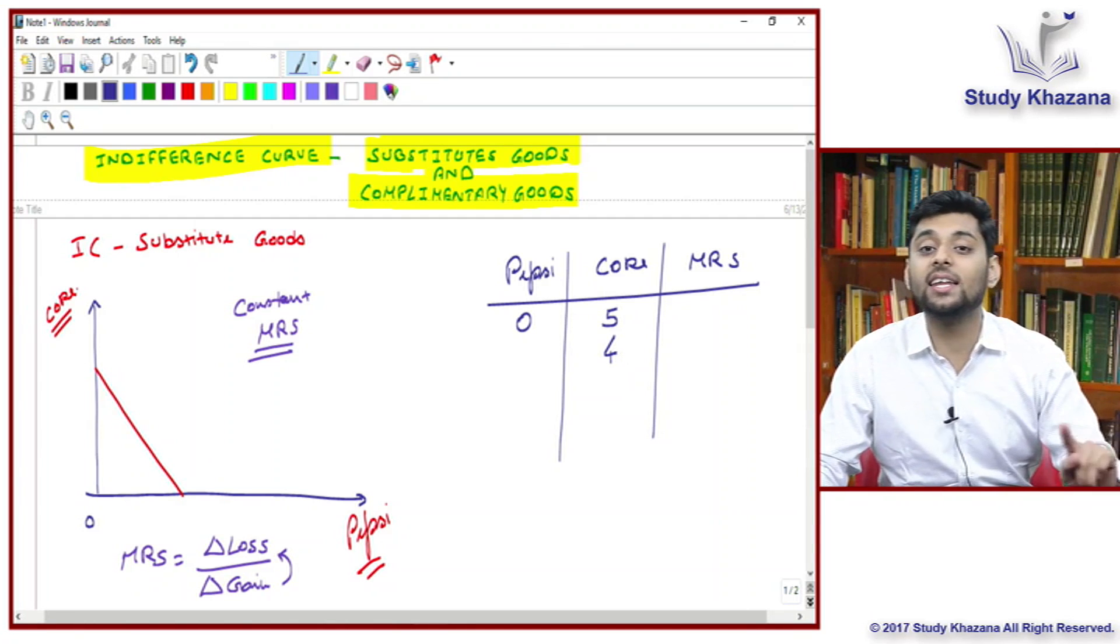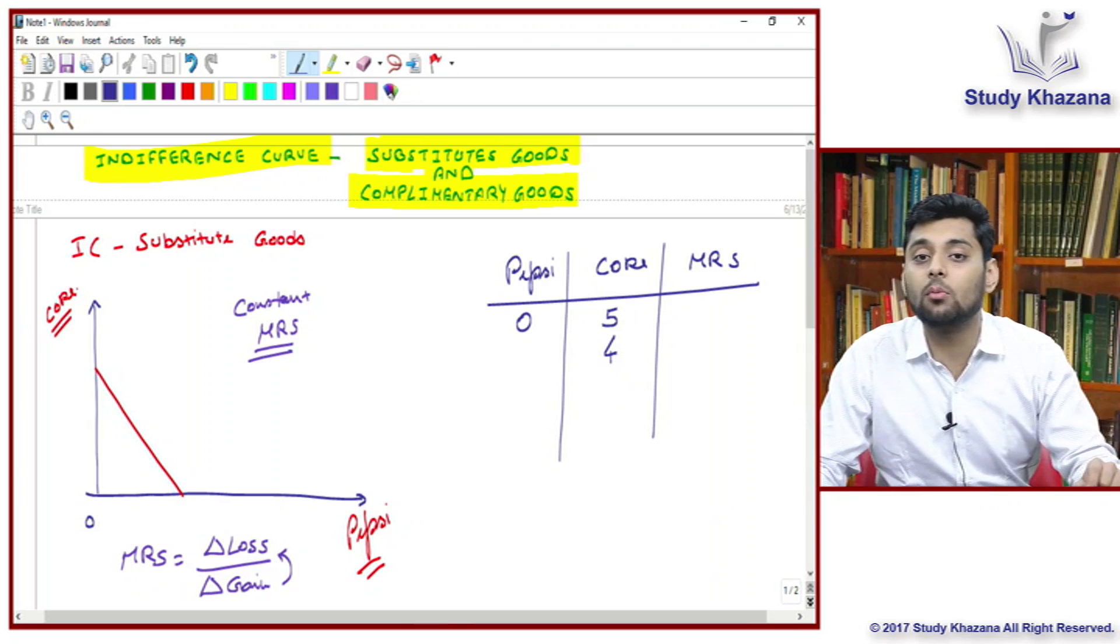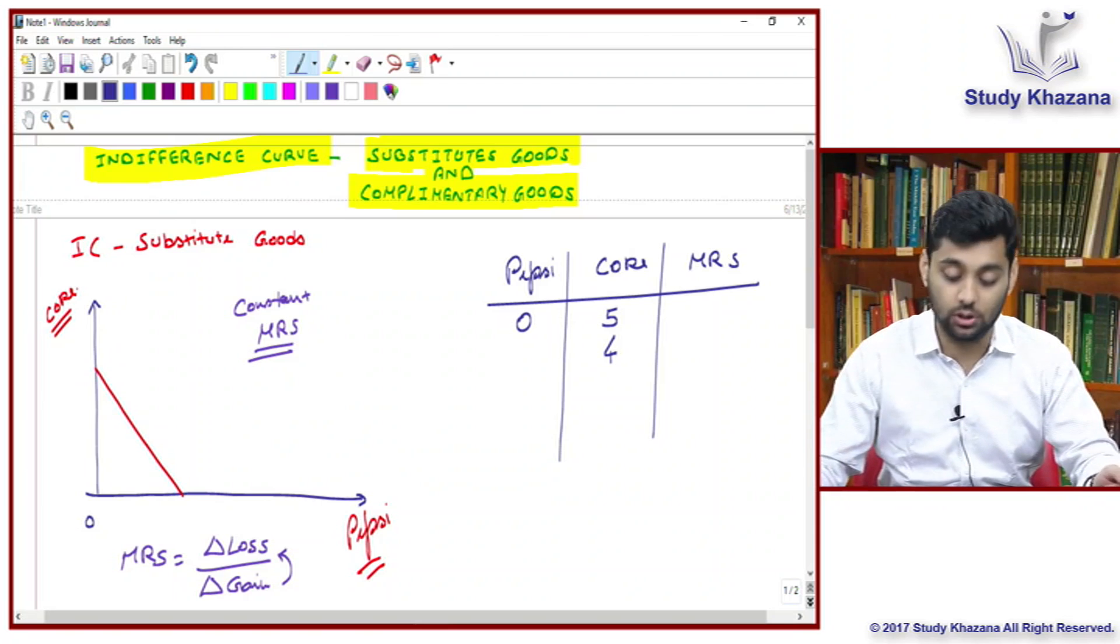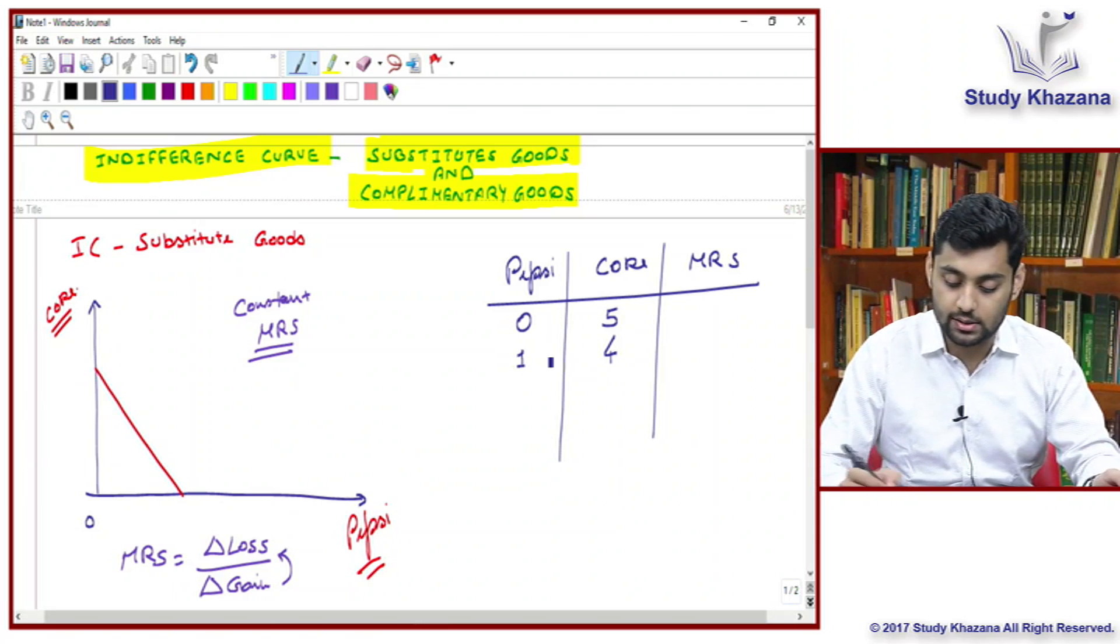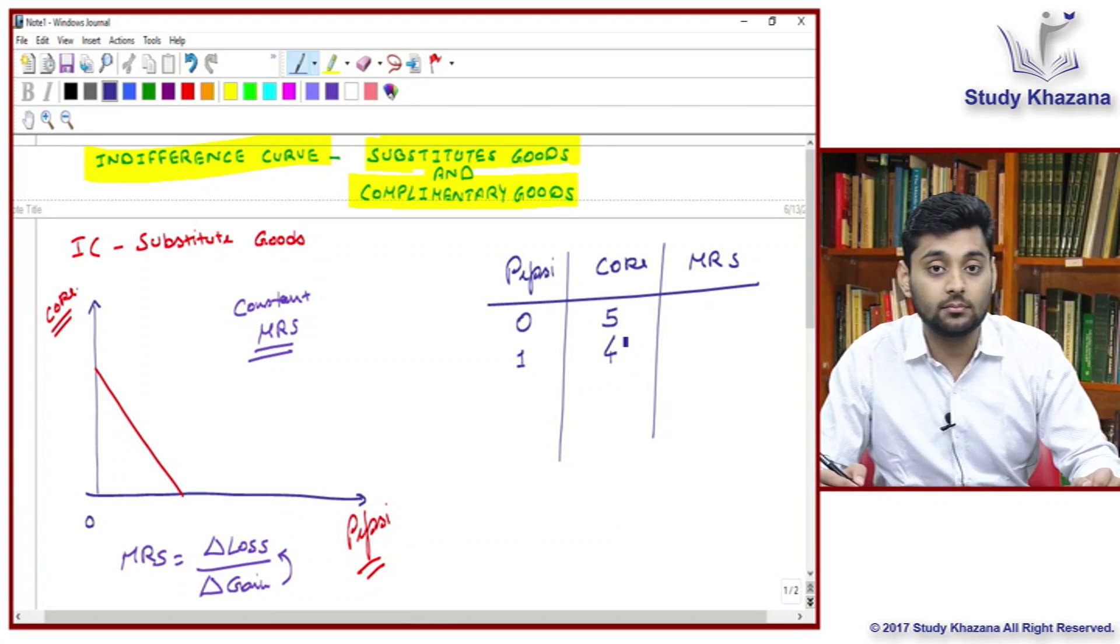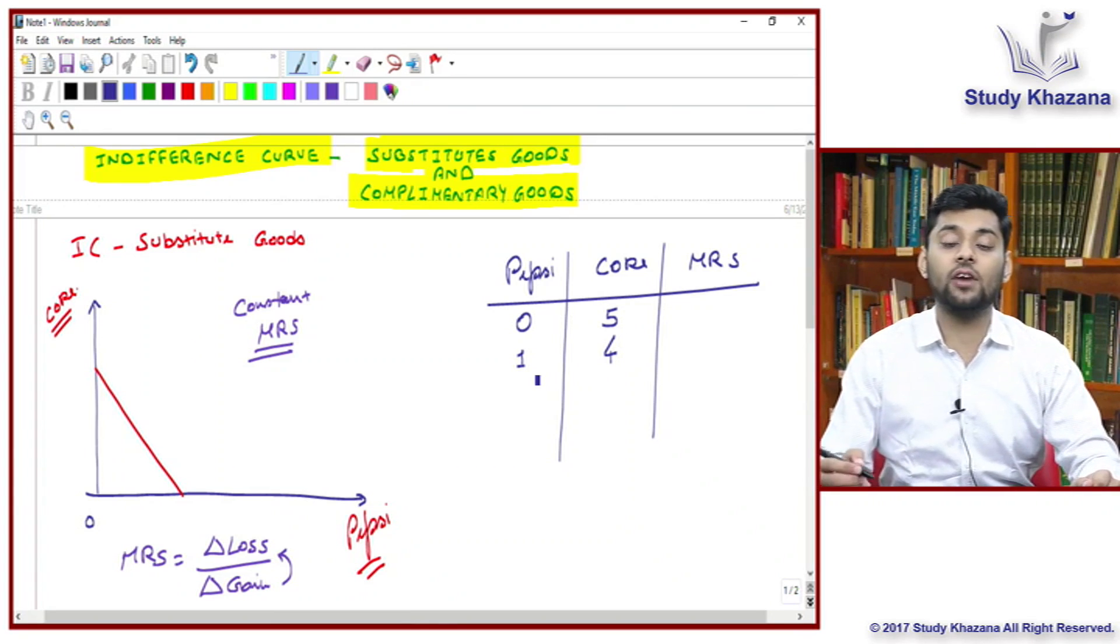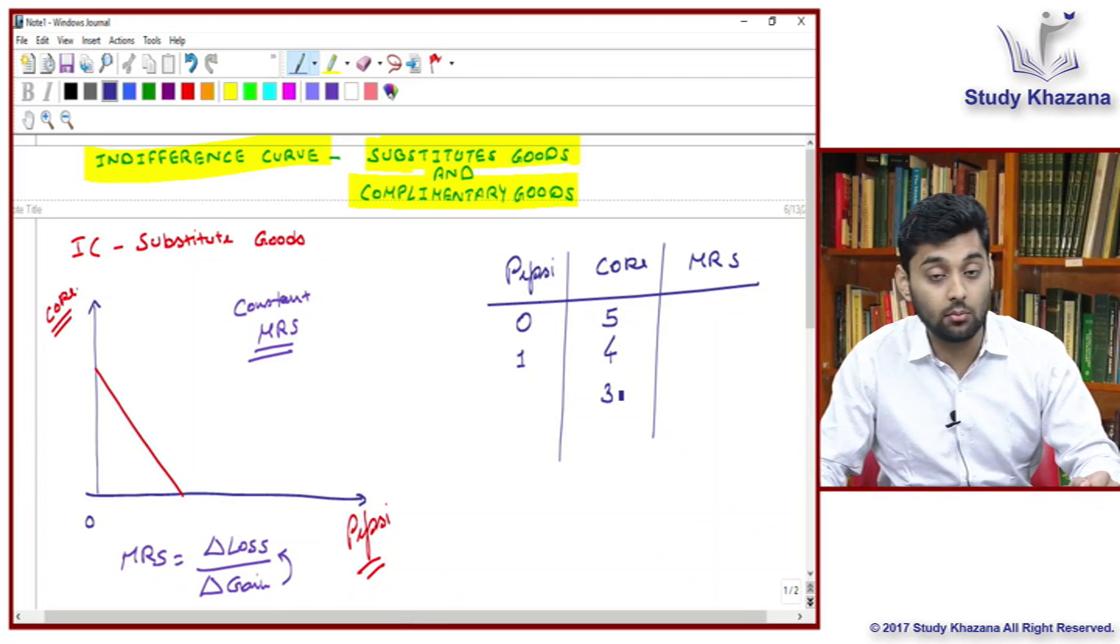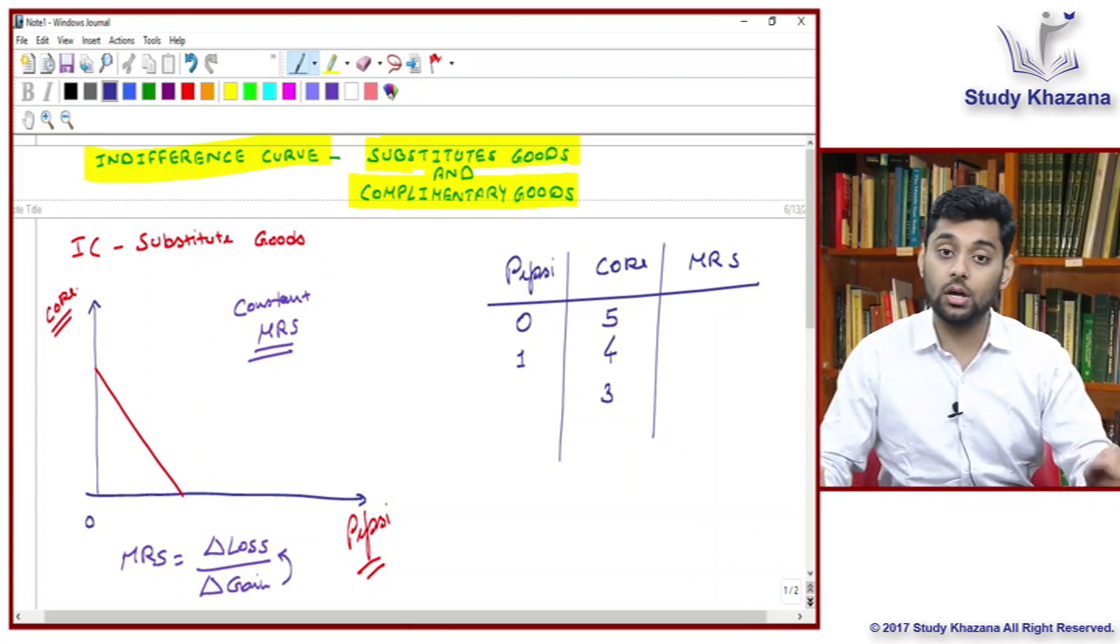Your friend in exchange, how many Pepsi bottles will he give? If you give 2 liters of 1 Coke bottle to your friend, your friend will also give 2 liters of 1 bottle because both are substitutes. If you give 1 Coke then you will gain 1 Pepsi.